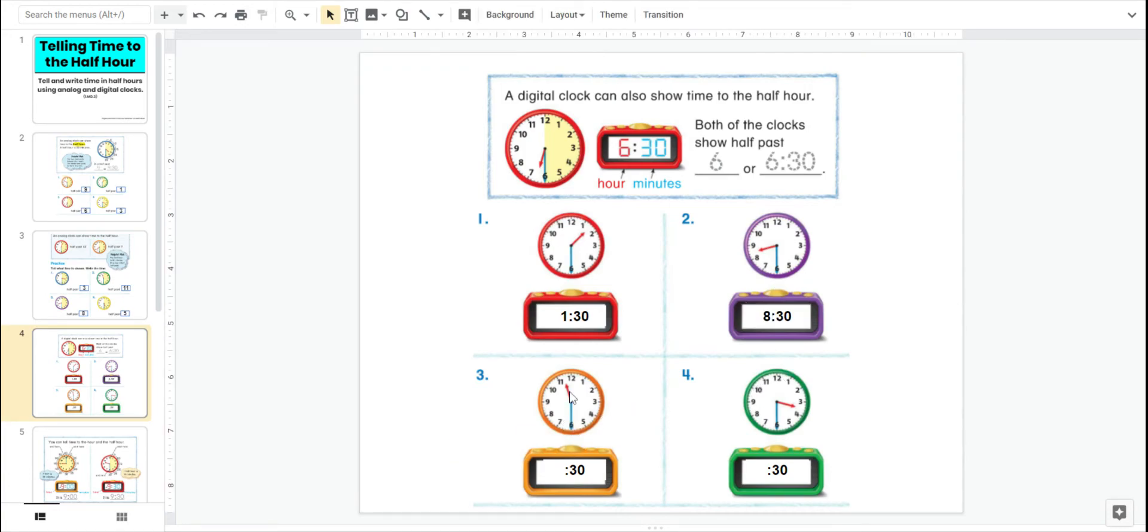Orange clocks. Hour hand's between the 11 and the 12. Long minute hand's touching the six. Good. 11:30. And the last one on this page. Hour hand is between the three and the four. Long minute hand is touching the six. Good. This is 3:30. Excellent job.